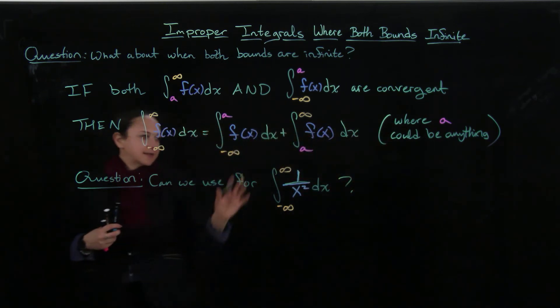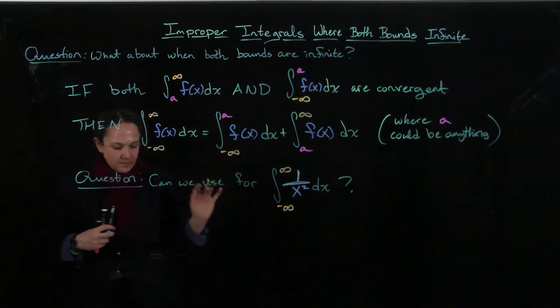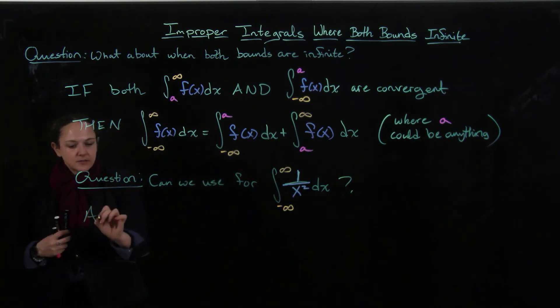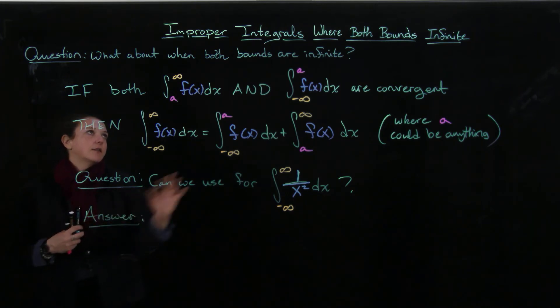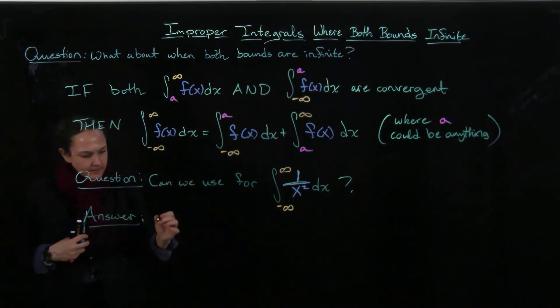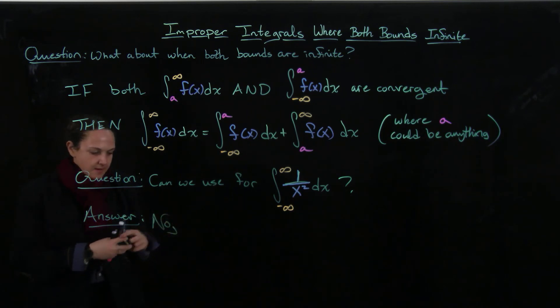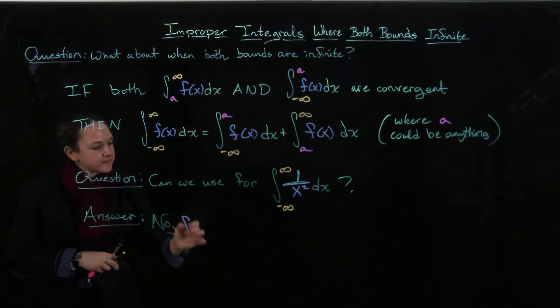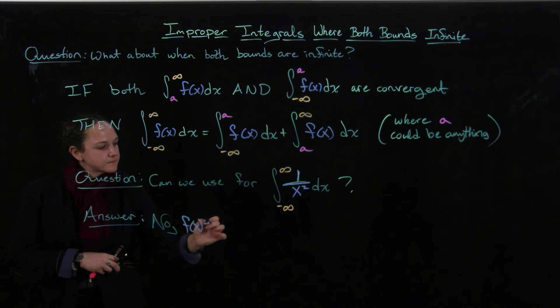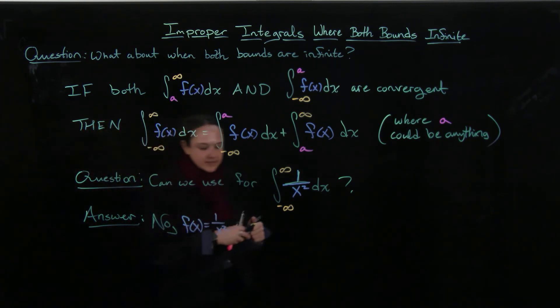And the answer is no, because this is not even defined at zero. So no, because f(x) equals one over x squared is not defined at zero.